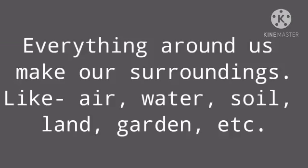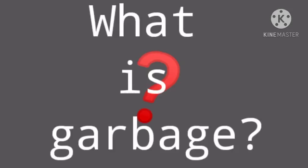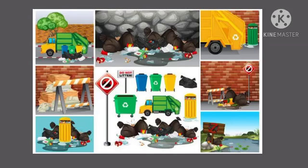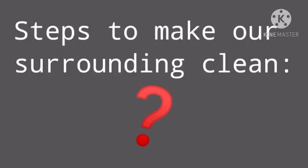Like air, water, soil, land, garden and many more. Now an important term arises: what is garbage? Things that make our surroundings dirty are known as garbage. For example, garbage on roads, rivers, lakes, ponds, playgrounds, etc.